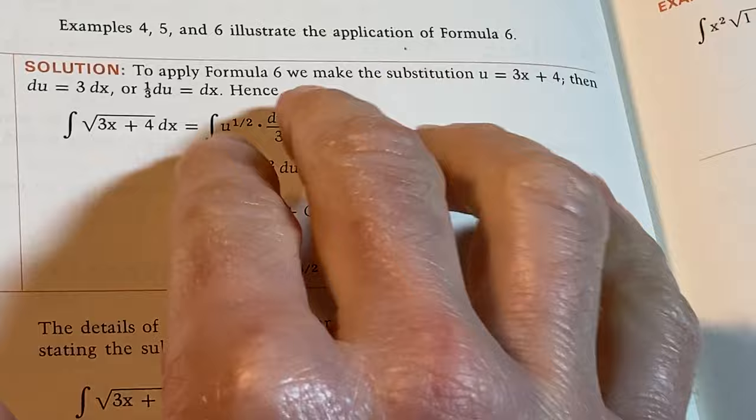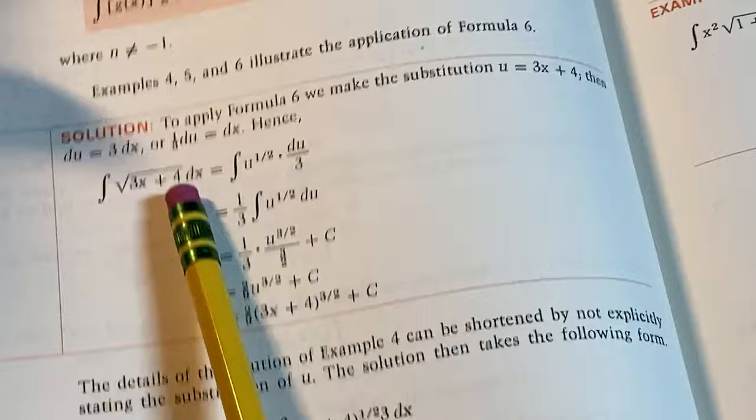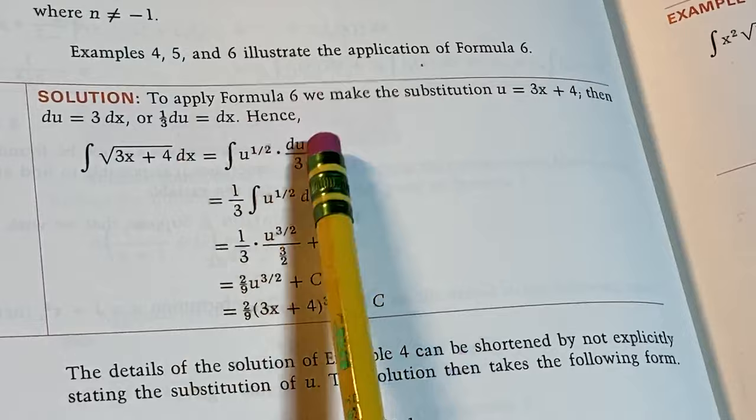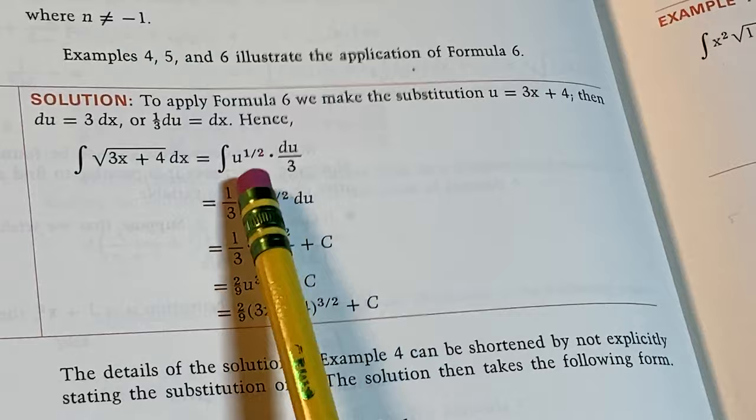And look, when he makes the substitution here, he makes it straight. So 3x plus 4 becomes u, dx becomes du over 3. So he shows every single step. I don't even do that, right? So Leithold makes a big effort in showing every step. Going from here to here, he does skip one step: three halves becomes two thirds, and that becomes two ninths.